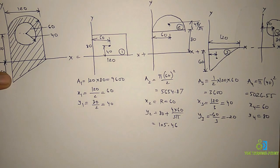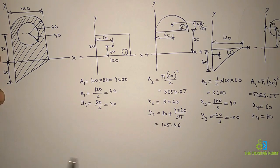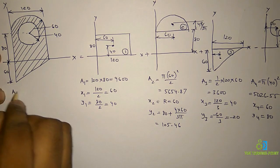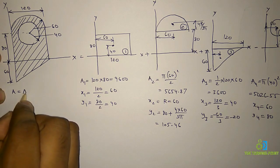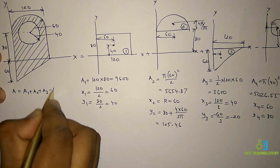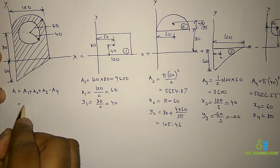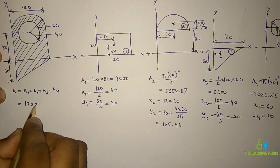Now substitute the values of A1, A2, A3, and A4 to find the total area. To get the total area, add the first three areas and subtract the final area. When I do that, I get this value.